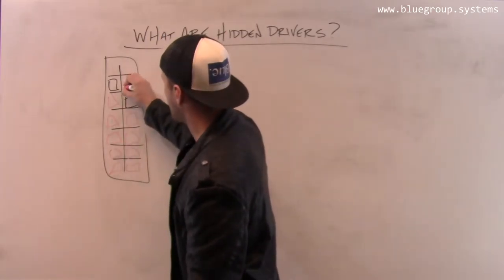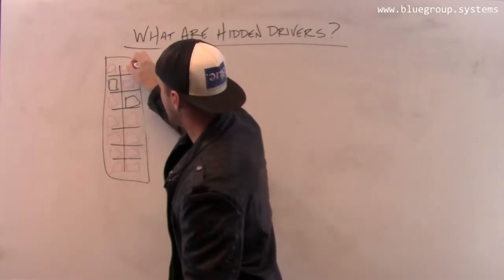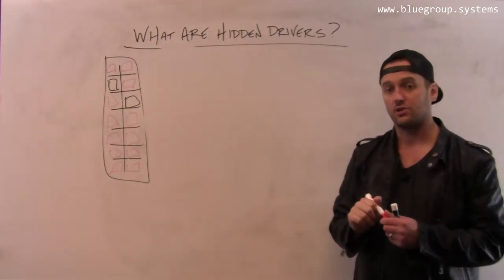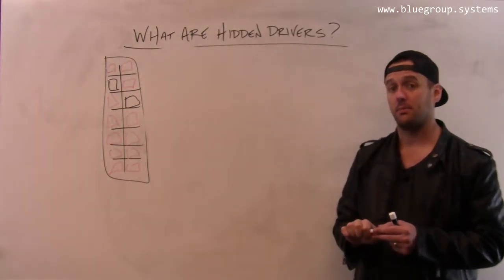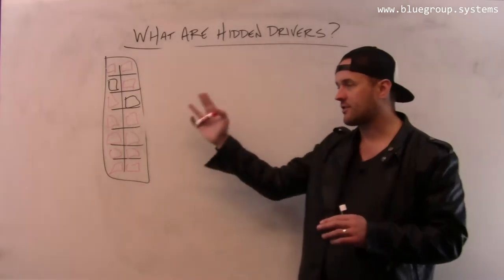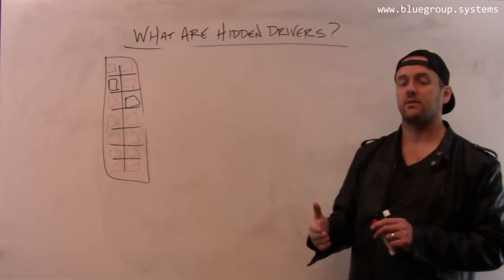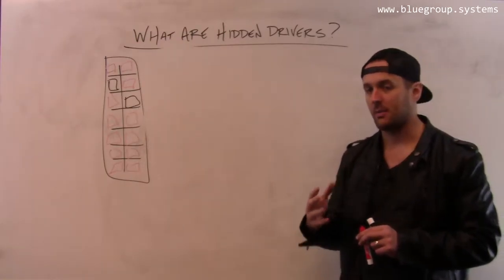And so if enough hidden drivers arrive, drivers that I'm not monitoring, then this lot could actually be full despite the fact that I only saw two monitor drivers show up. So I need to understand the uncertainty that's introduced by the hidden drivers and be able to incorporate it into the models that we use to determine lot capacity.